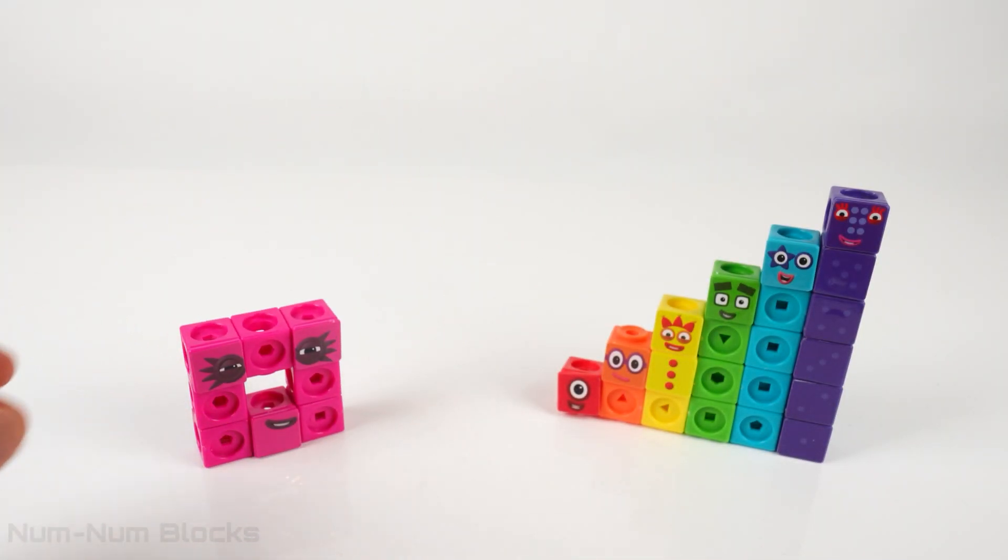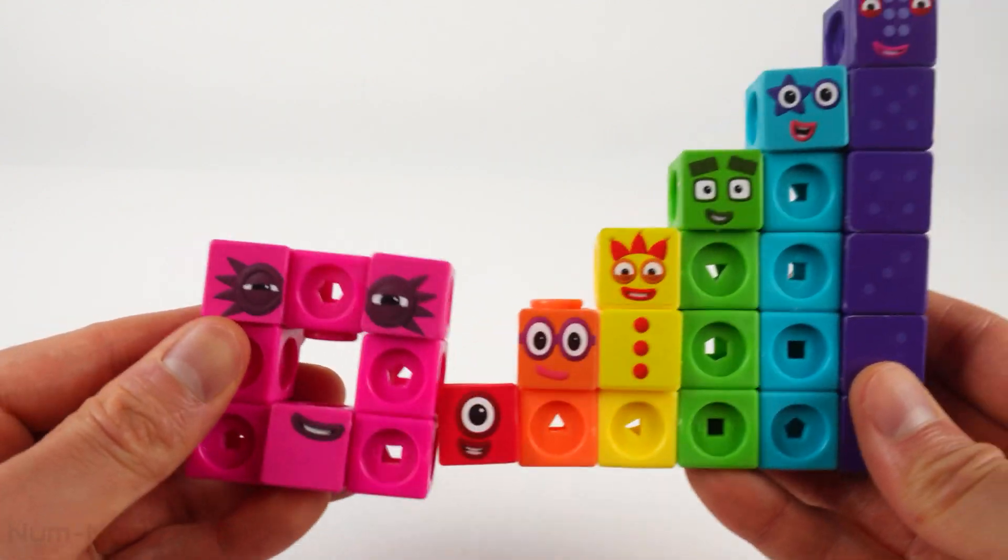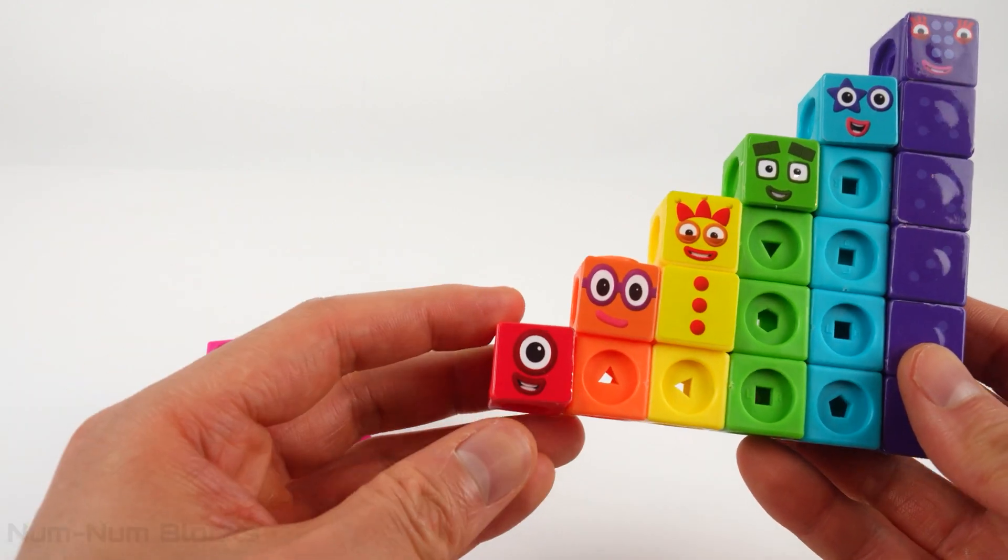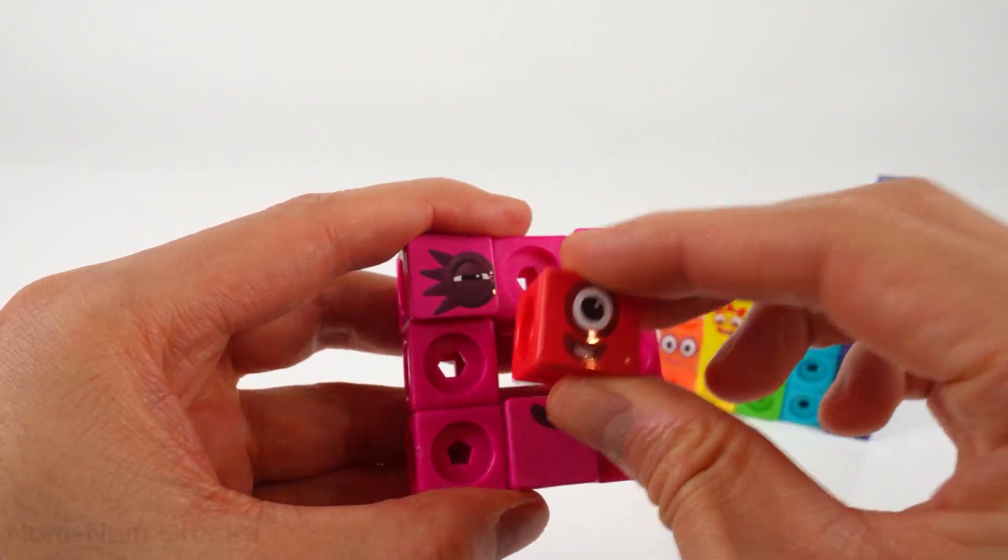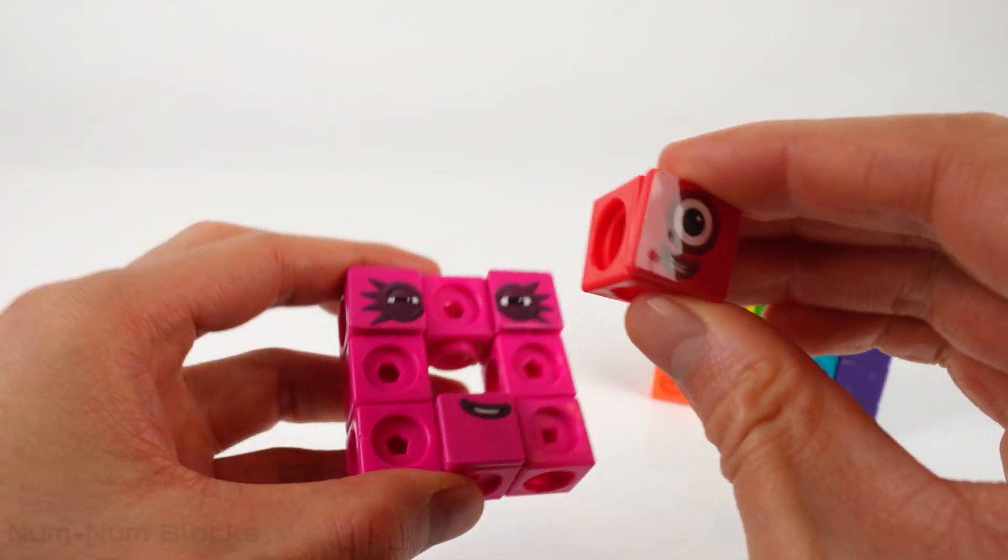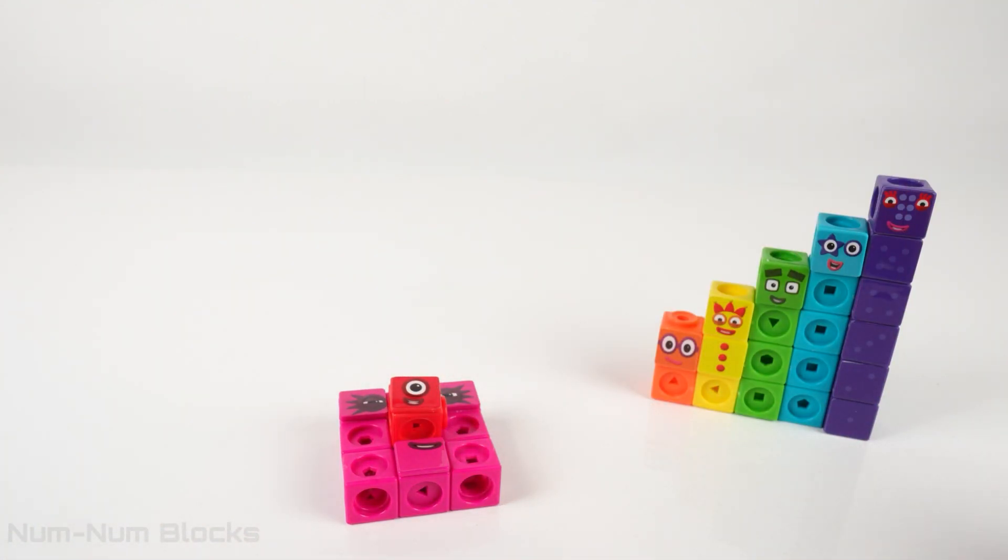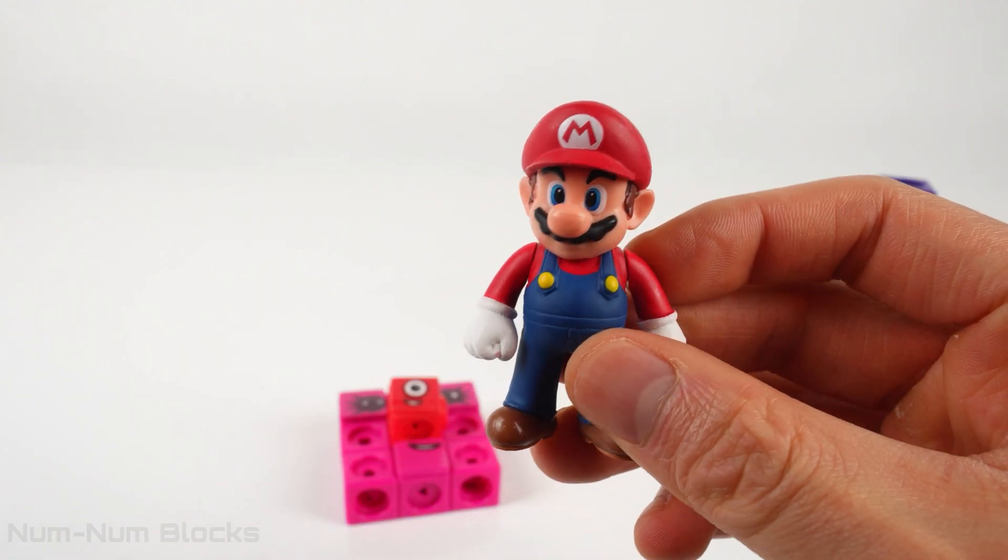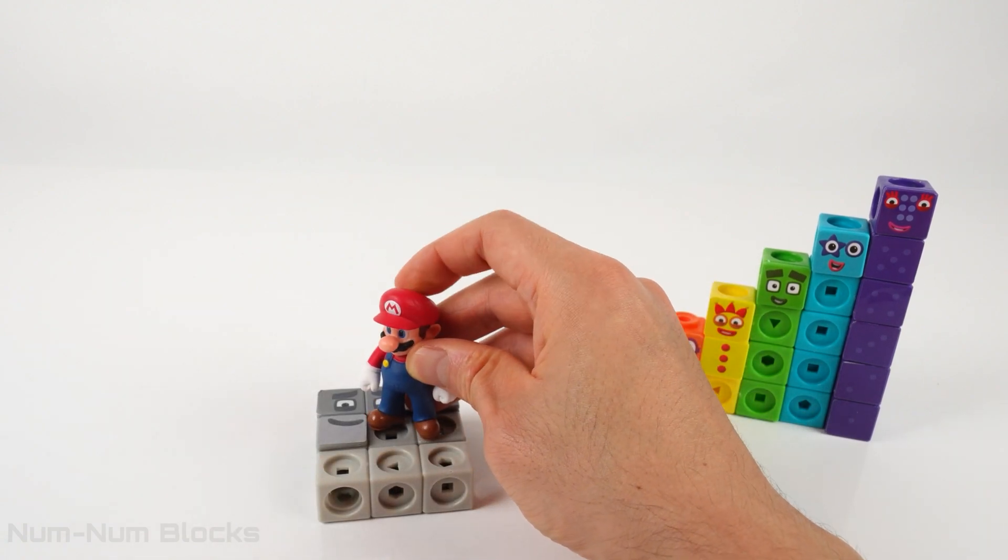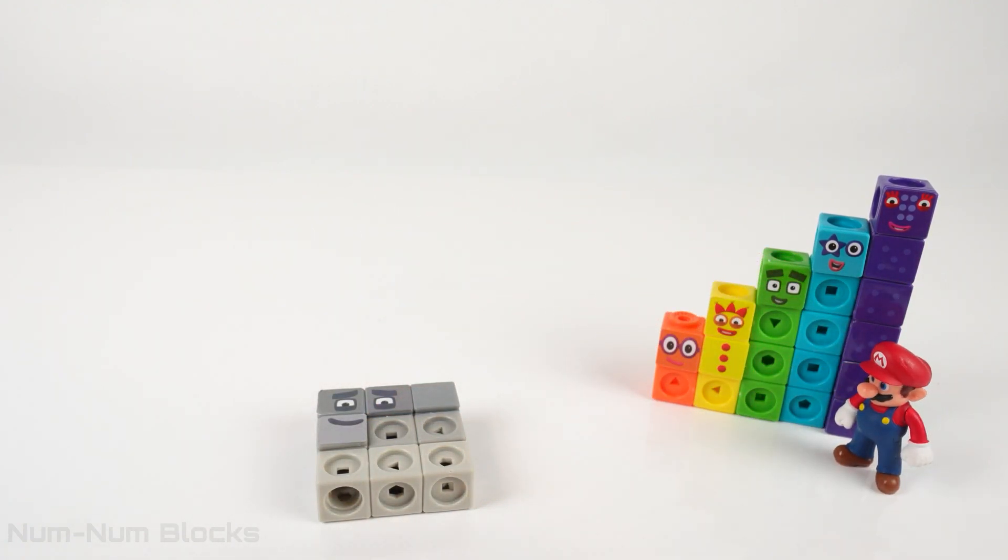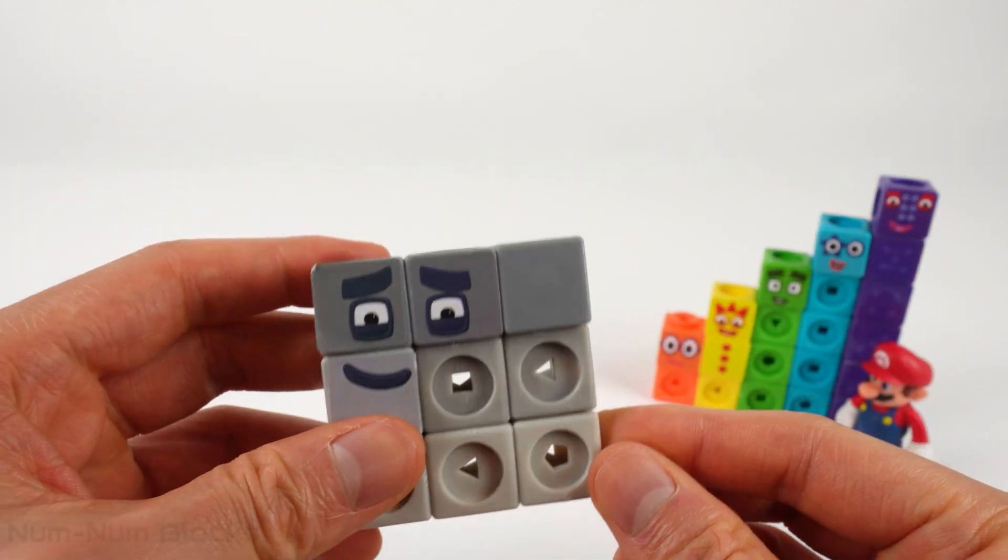Let's fill the hole in number eight. It looks like number block one can fit into the hole. Let's grab number one and see if it fits. It's a bit tight. I know who can help us. It's Mario! Let's go! Mario stomped number one into eight. And now we have number block nine in square form.